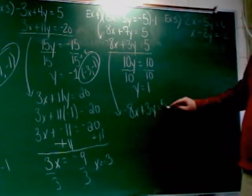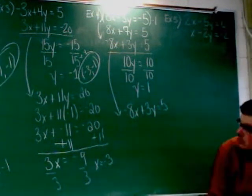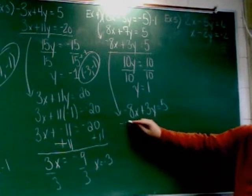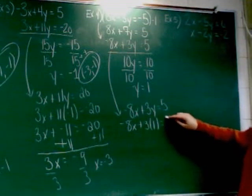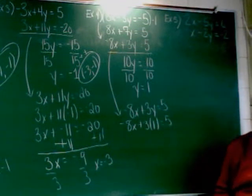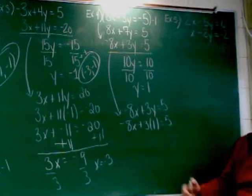This one here? Yeah. Okay. So I've got negative 8x plus 3y equals 5, and I'm changing y into 1.